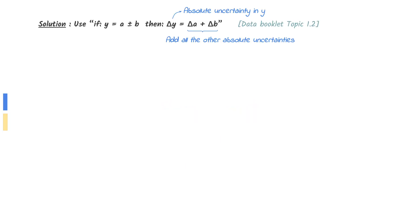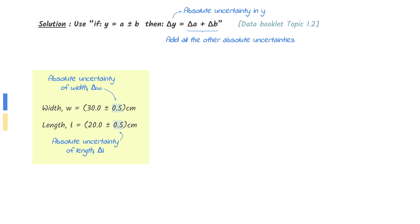To find the percentage uncertainty, first we need to find the absolute uncertainty of the perimeter of the paper. In addition and subtraction, absolute uncertainty can be found by adding all the other absolute uncertainties.